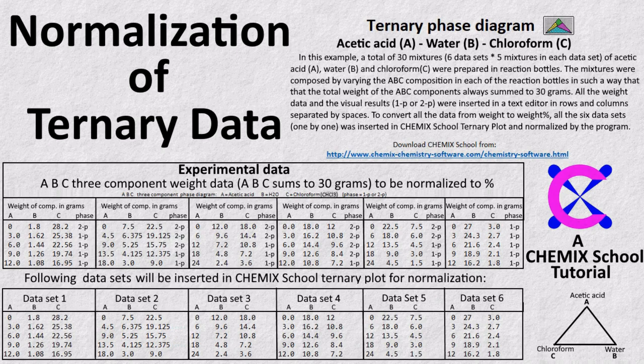By default, ternary plots assume that the input data is normalized, which means that the sum of the absolute values of cells in every row equals 100. This Chemex School ternary plot example will show you how to normalize experimental data, and how to create border lines and phase regions with the help of text, splines, and fill colors.